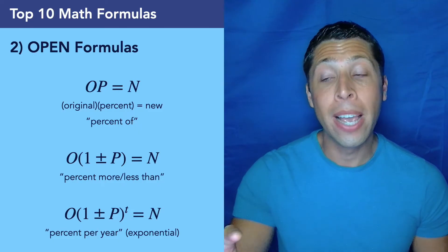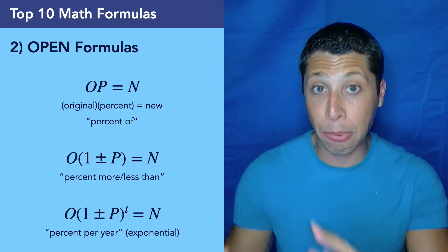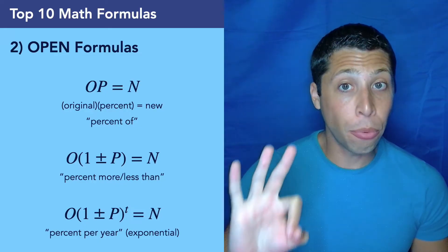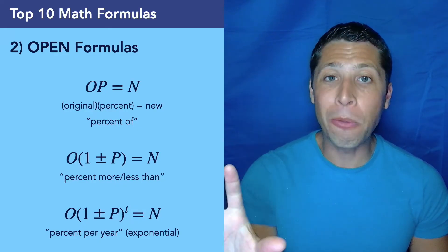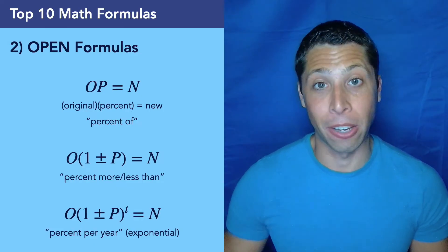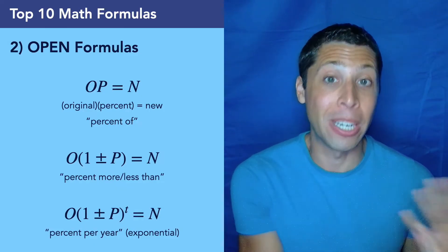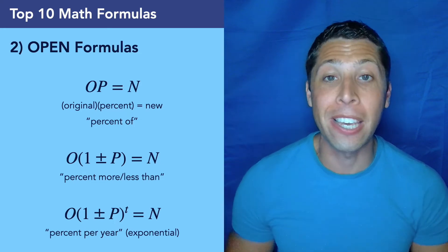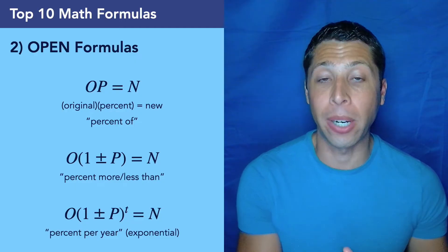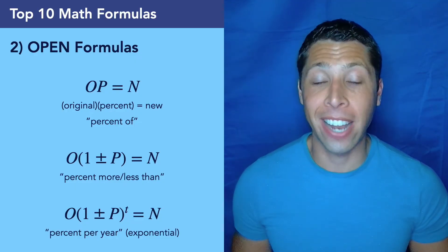This is why it's number two, is this is a case where the SAT is absolutely going to mess with you, but this formula was designed to keep you from falling into their traps. So there are three versions. The general OPEN formula, it looks like the word open, is when we want to find the percentage of something. So like what is 5% of 300? That's how we would use this OP equals N, where O is the original, P is the percentage as a decimal, and N is the new amount that we're getting out.